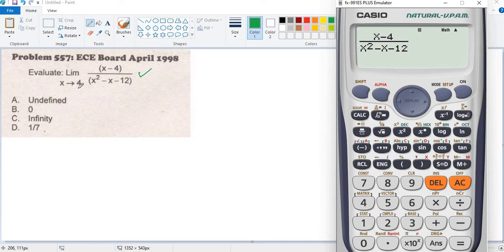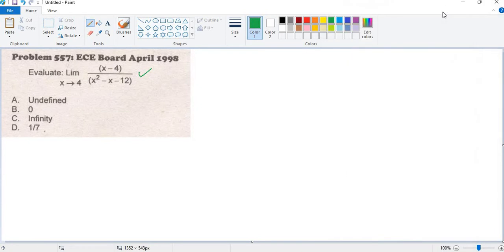The nearest value to 4. So for example, the nearest value to 4 is as x approaches to 4.00001. So this is the value nearest to 4.